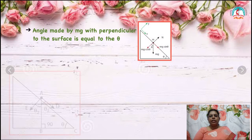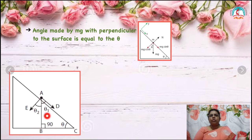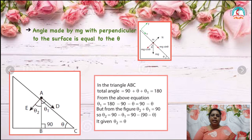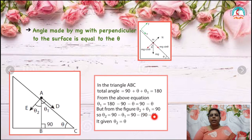Let's see the explanation for how we got theta. When we extend the line, we get a right angle triangle. This angle is 90 degrees. Let us consider this angle to be theta 1. So the total angle will be 90 degrees plus theta plus theta 1, which equals 180 degrees. Therefore theta 1 equals 180 minus 90 minus theta, which gives theta 1 equals 90 minus theta. From the figure, theta 2 plus theta 1 equals 90 degrees, so theta 2 equals 90 minus theta 1. Substituting theta 1, we get theta 2 equals 90 minus (90 minus theta), so theta 2 equals theta.